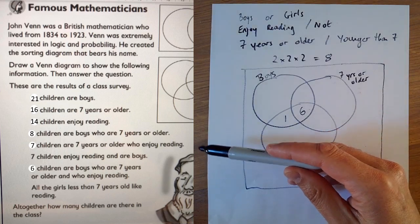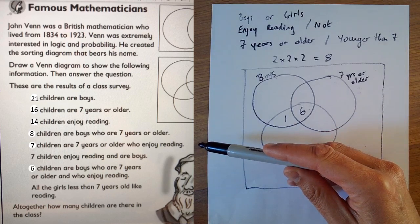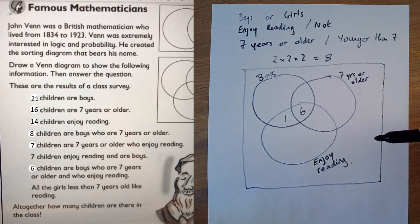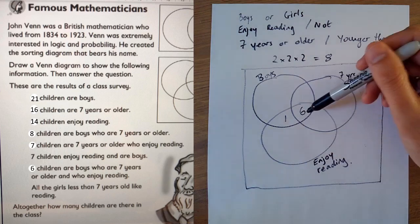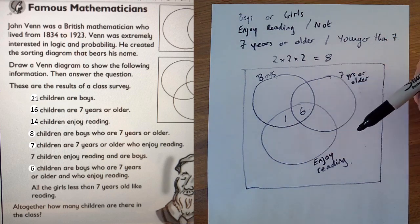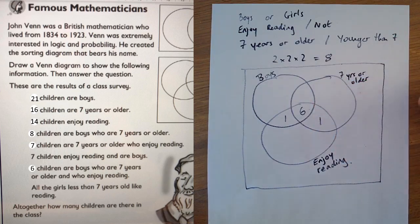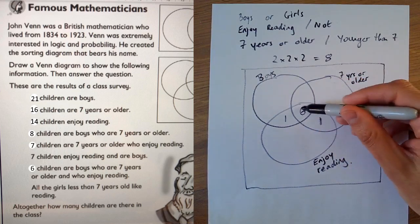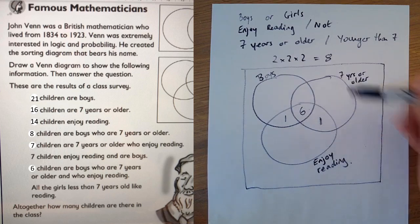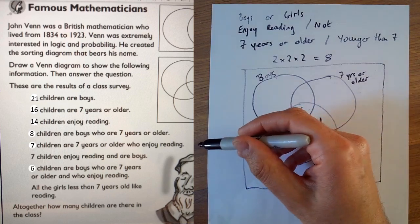Let's move up one. Seven children are seven years or older who enjoy reading. Seven years or older who enjoy reading. And it's seven again. So that's these two. So this is a one again. I probably should have chosen different numbers. But let's stick with what we've got now. So this is a one again. So we've got seven people here who enjoy reading and are seven years or older. Just as that says.